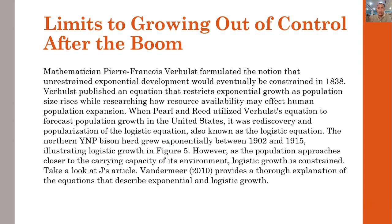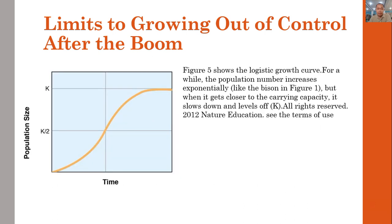However, as the population approaches closer to the carrying capacity of its environment, logistic growth slows. Figure 5 shows the logistic growth curve — for a while the population number increases, as with the Bison in Figure 1, but when it gets closer to the carrying capacity, it slows down and levels off. It then maintains the status quo at or near carrying capacity.